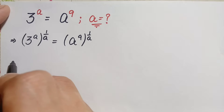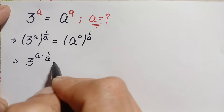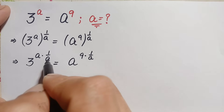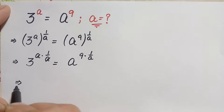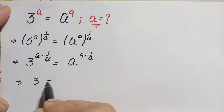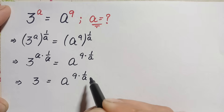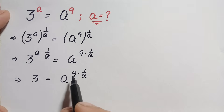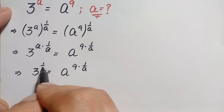Using the exponential identity, we multiply the powers. So a × (1/a) cancels to give 3^1, which is simply 3. This equation becomes 3 = 8^(9/a). Now we will try to eliminate this 9 from the right hand side by raising both sides to the power of 1/9.